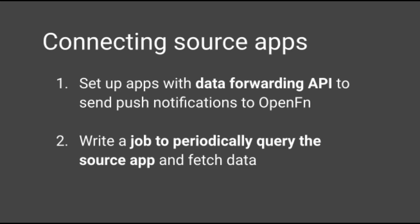When connecting source apps to OpenFn, it usually looks like one of two ways. The first is to set up the source app to automatically forward data to OpenFn — a lot of applications have this data forwarding feature built in. For example, in CommCare you can set up a project to automatically send or post data to an OpenFn unique inbox URL. Anytime you sign up for OpenFn, you get a unique endpoint URL that you can push data to.